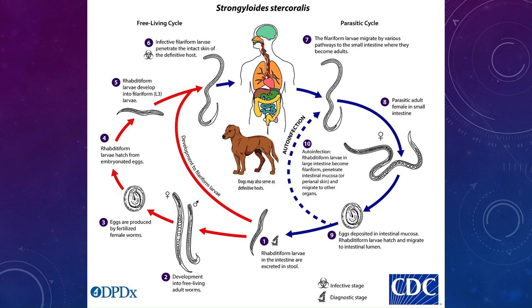Life cycle of Strongyloides stercoralis: rhabditiform larvae in the intestine are excreted in the stool of the infected person. These rhabditiform larvae develop into filariform larvae, the infective stage, which penetrate the intact skin of another host. Filariform larvae migrate by various pathways to the small intestine, where they become adults. Adults lay eggs deposited in the intestinal mucosa, which hatch into rhabditiform larvae. These larvae migrate to the small intestine and can become filariform larvae, which penetrate the intestinal mucosa and migrate to other organs — this is called autoinfection.